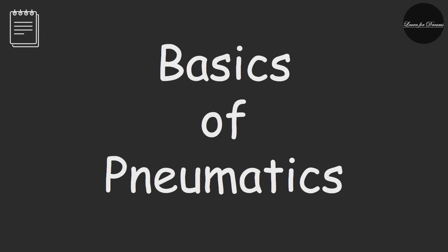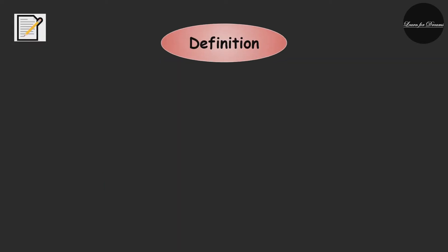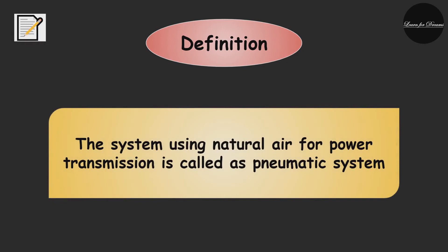Hello students and welcome back to the channel. Today we will see basics of pneumatics. As usual we will start with the definition. The system using natural air for power transmission is called a pneumatic system. The compressed air is stored in the cylinder, which is used as a medium for carrying out mechanical work.